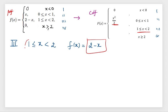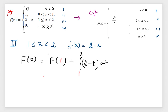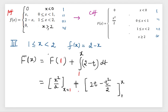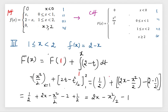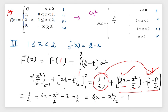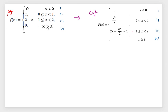For the next interval, one to two, the function is 2 minus x and the lower value is 1. Using the formula, we integrate only the current interval function (2 minus t), with the lower value fixed at 1 and upper value variable x. We also add the previous CDF evaluated at x equals 1, which gives 1/2. After integrating and substituting, we get 2x minus x²/2, and when we simplify with the 1/2 term we get 2x minus x²/2 minus 1.